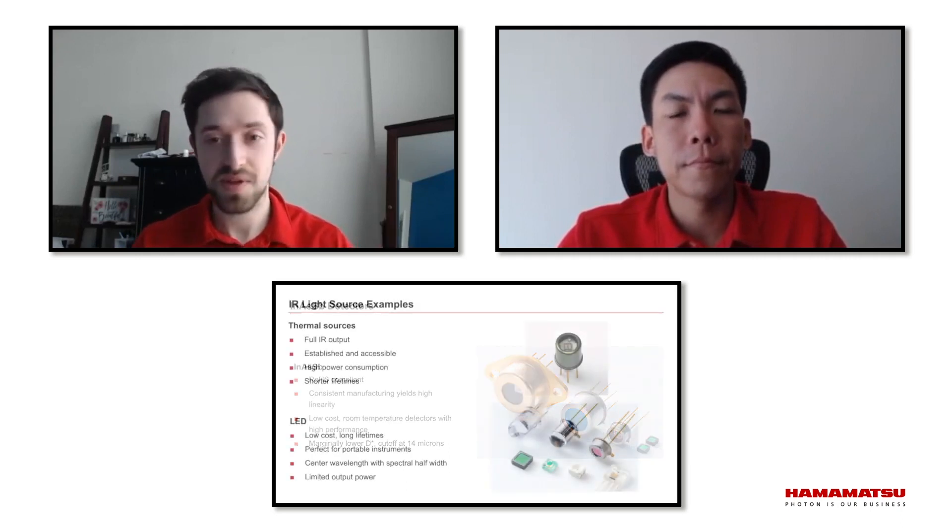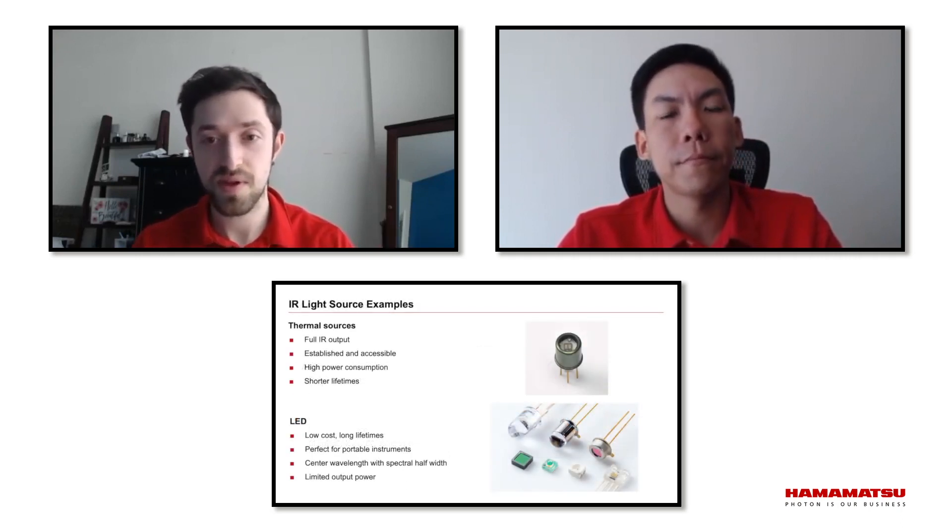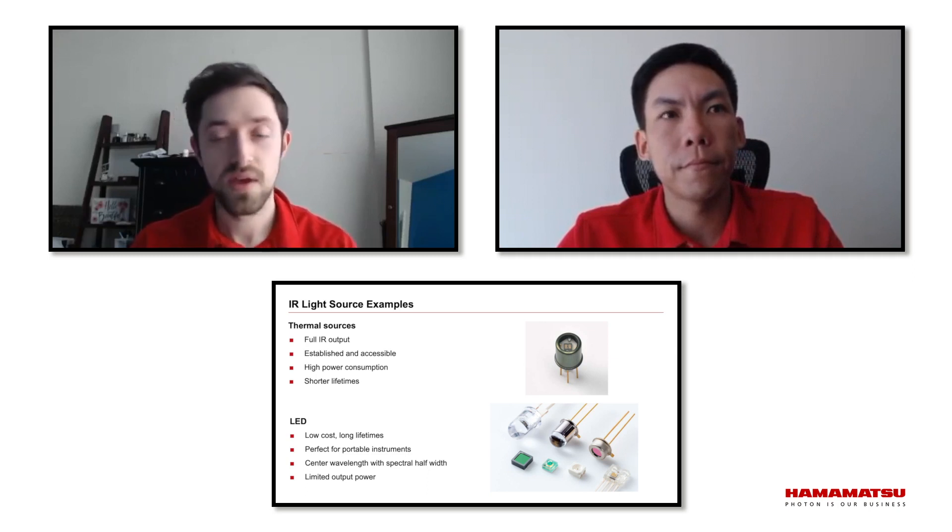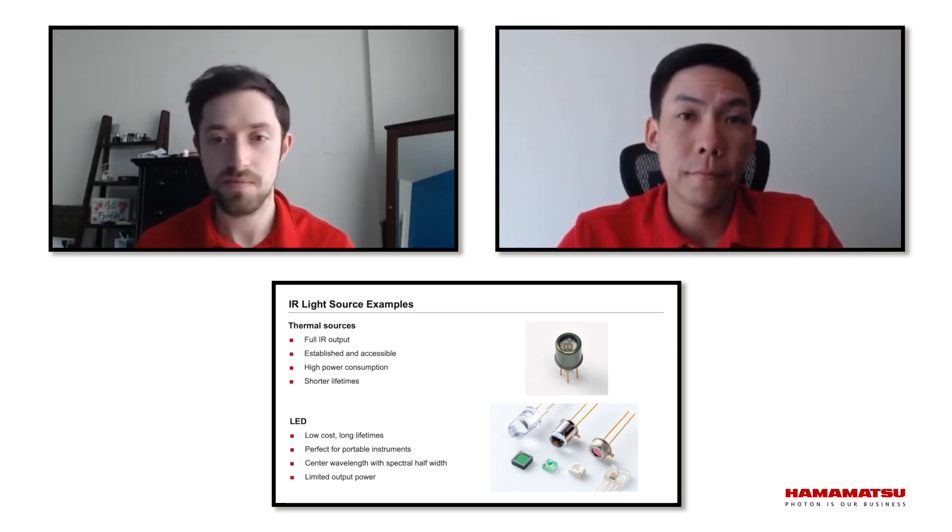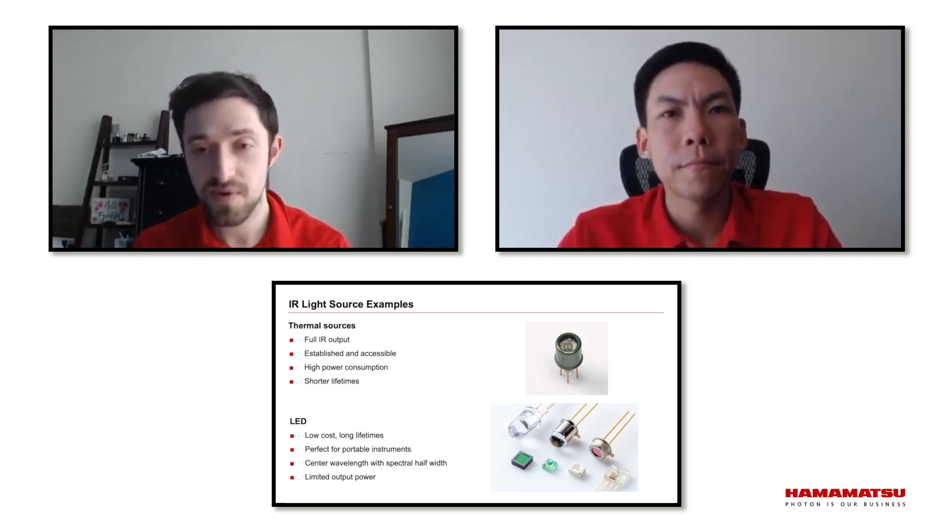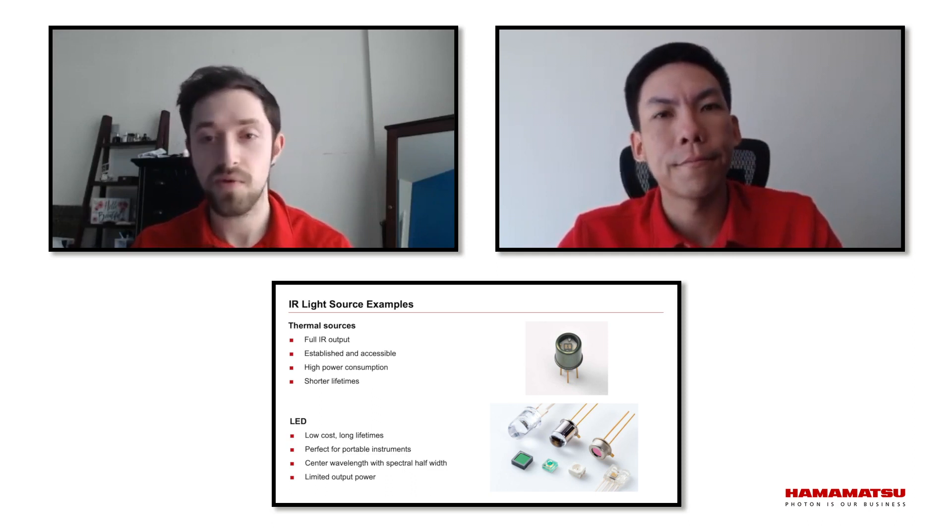Then we come to light sources, right? There's a light source, the thing that's absorbing the light and creating some absorption characteristic and then the detector. There are, of course, thermal light sources, right? Black body radiation that emit all sorts of wavelengths. However, they aren't quite power efficient. They have short lifetimes and they don't provide a whole lot of output.